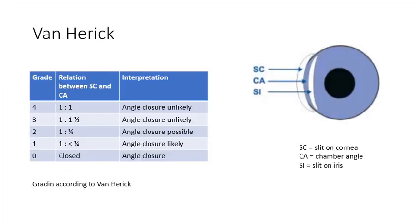The Van Herrick method of angle estimation is very simple, and it's performed on a slit lamp using just a narrow beam of light, which is projected onto the peripheral cornea. So if the distance between the posterior surface of the cornea and the iris, which is termed CA, the chamber angle, has at least the same width as the slit, SC, which is projected onto the cornea, then the angle is widely open.